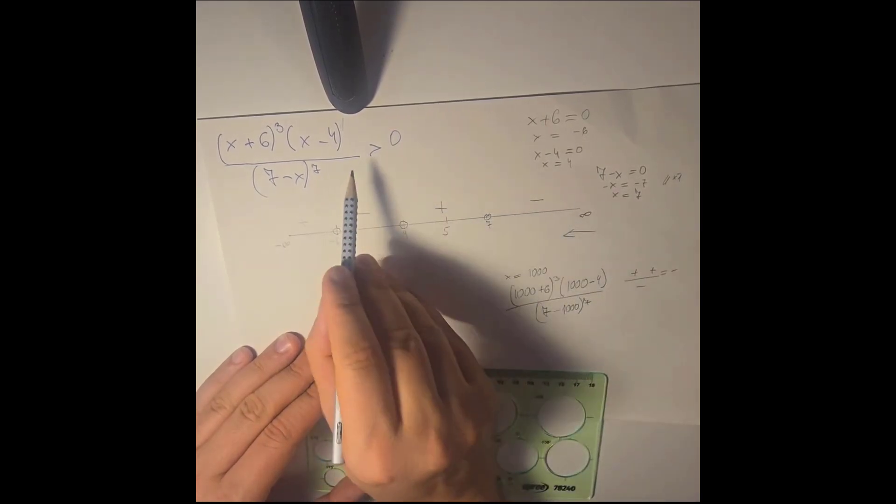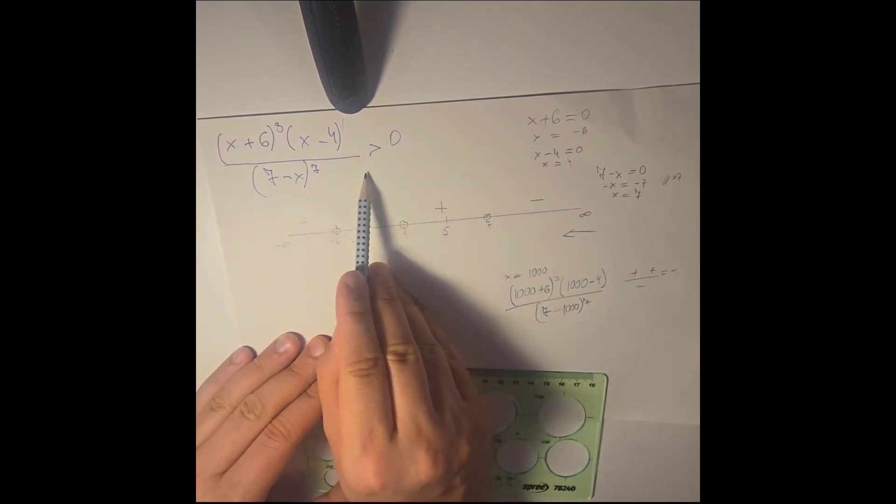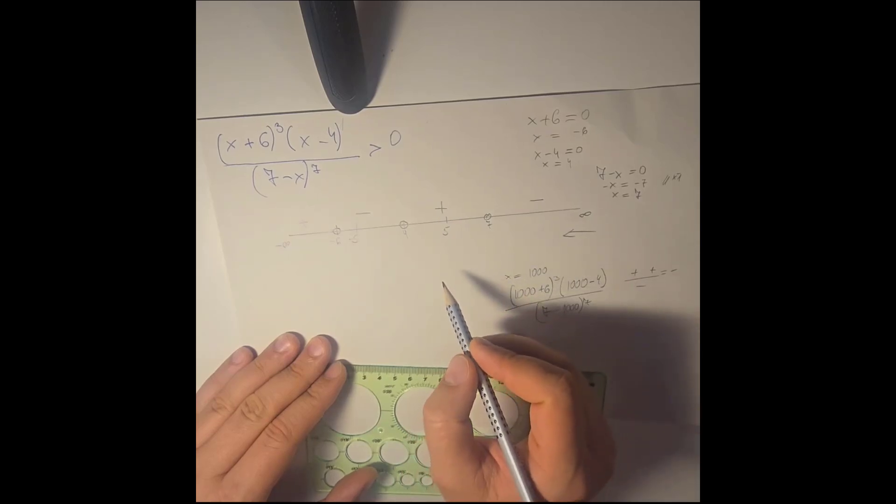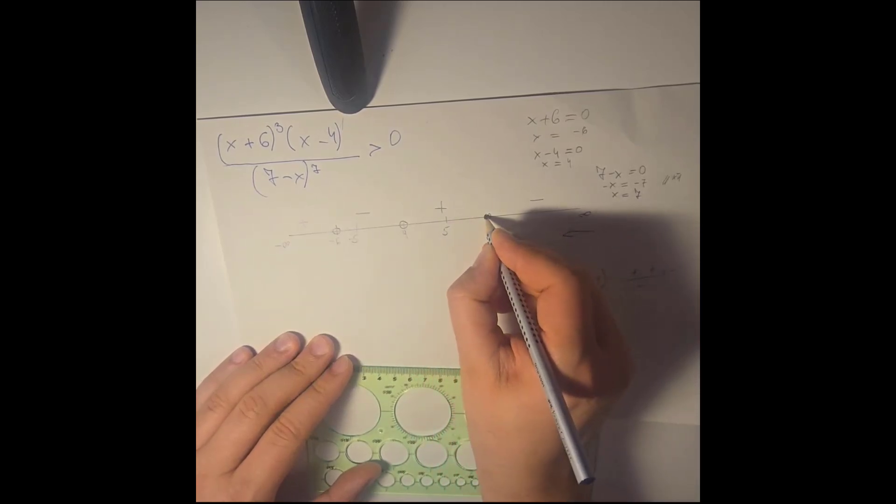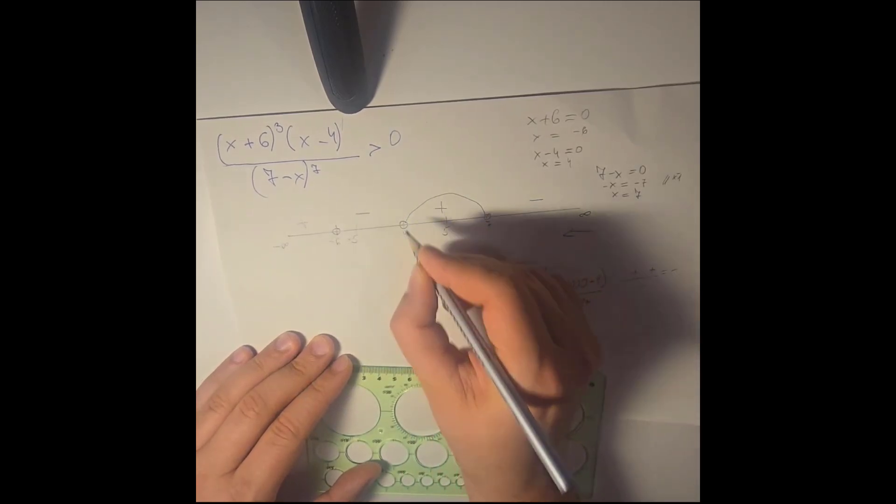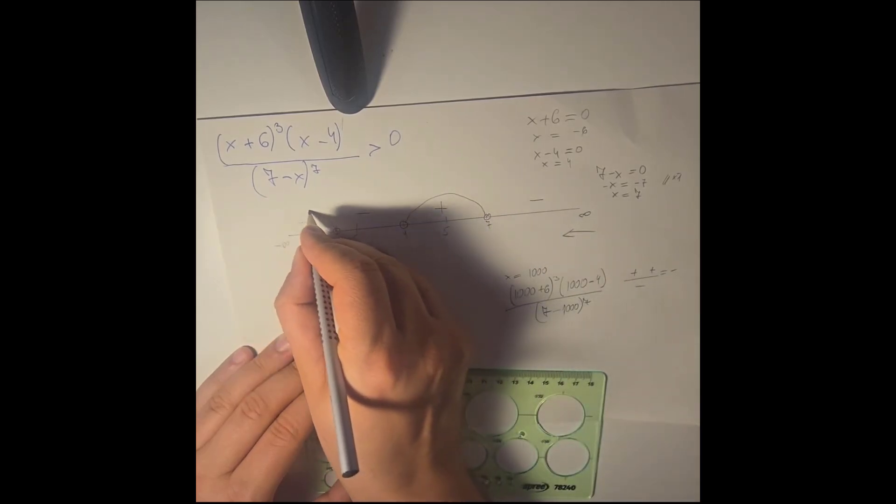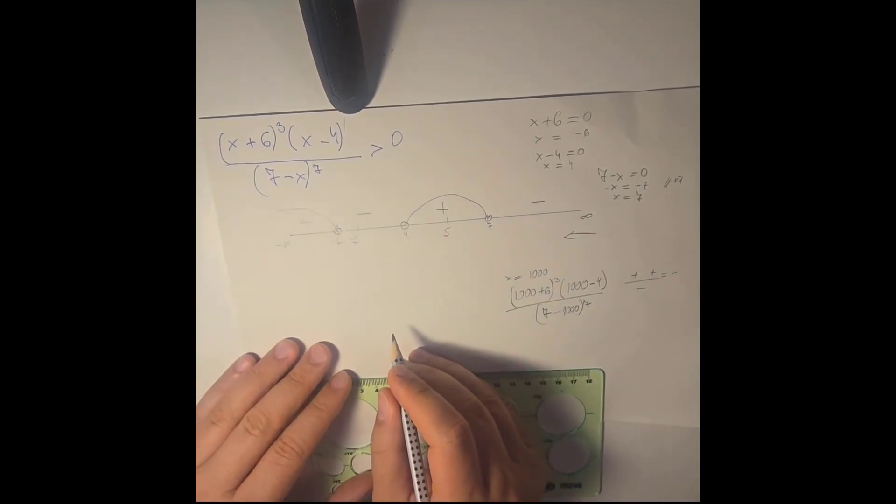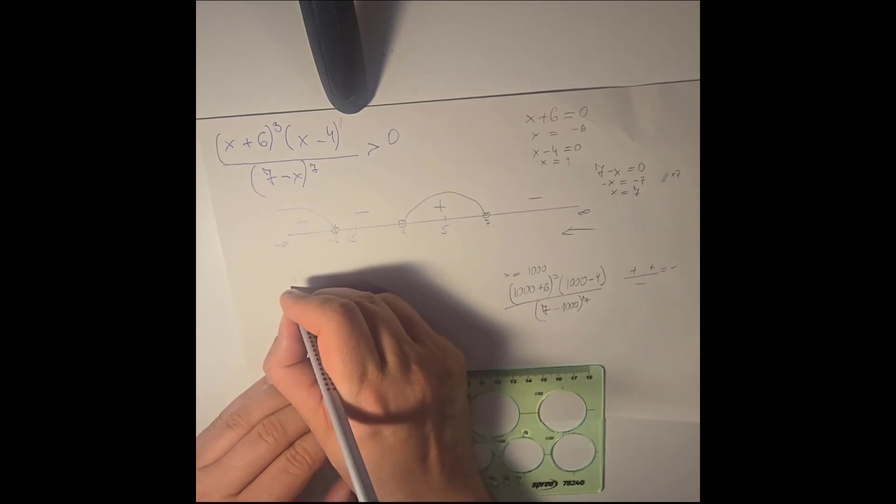So we are looking for a solution where x is bigger than 0. So in our case, x is bigger than 0 here and here. And we write it down like this.